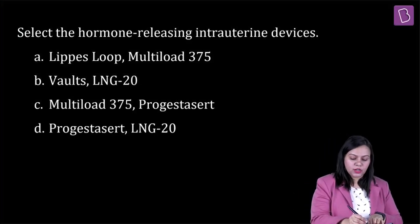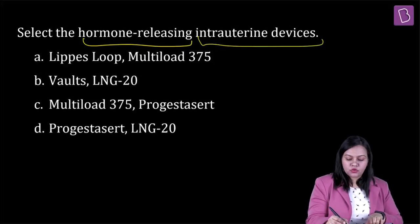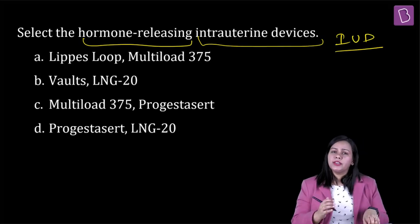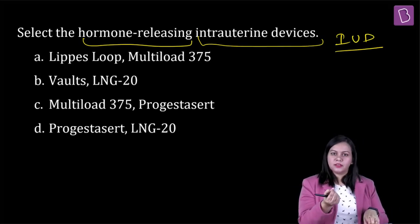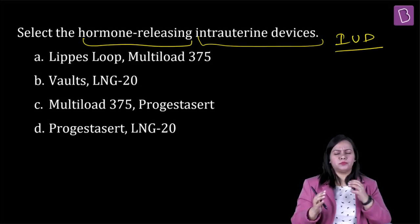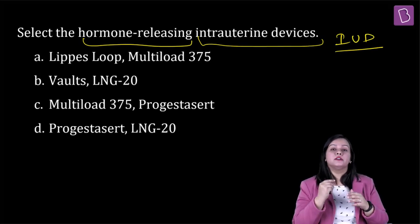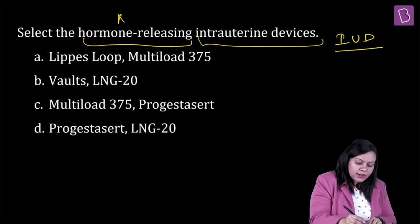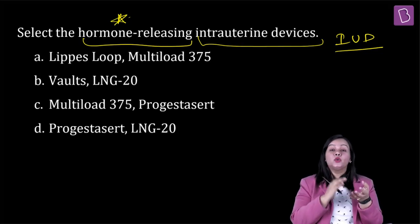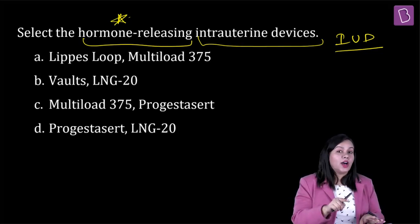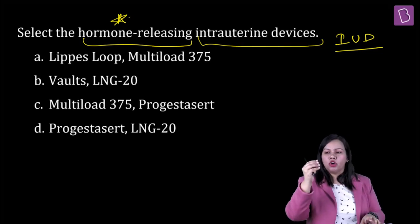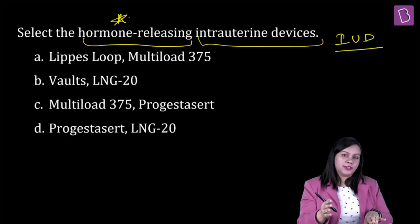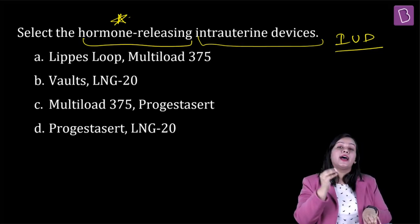Select the hormone-releasing intrauterine device. An IUD is a device inserted into the uterus through the opening of the vagina. The important point is that we are looking at IUDs which are hormone-releasing, not copper-releasing or barium sulfate-releasing. You have to be very cautious about what the question is asking — it's a direct question.